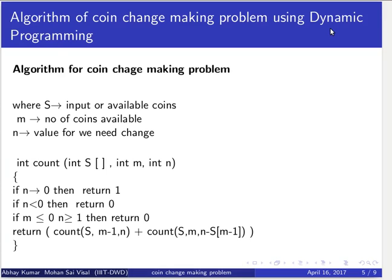If N equals 0, then return 1 — meaning there is one way to make change for 0 rupees: simply give nothing. If N is less than 0, then return 0 — no one can demand that change. If M is less than 0, meaning we have no coins available and someone asks for change, simply return 0. Otherwise, return count(S, M minus 1, N) plus count(S, M, N minus S[M-1]). This recursion continues until the base conditions are satisfied, solving subproblems and storing results, and finally returning the number of ways to make change.